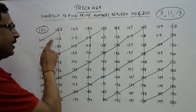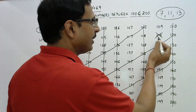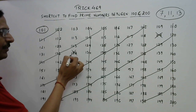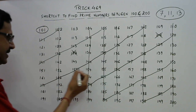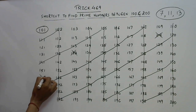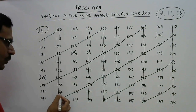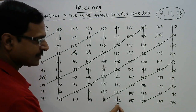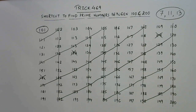112 plus 7 is 119 — this is a multiple of 7, so we need to strike it off. Plus 7 is 126, struck off. Plus 7 is 133, strike this off. Plus 7 is 140, then 147, 154, 161 — strike this off also. Then 168, 175, 182, 189, and 196. So we have struck off three more numbers which were not cancelled earlier but are multiples of 7. Now 7 is done.